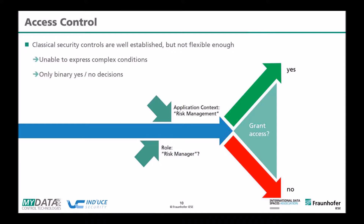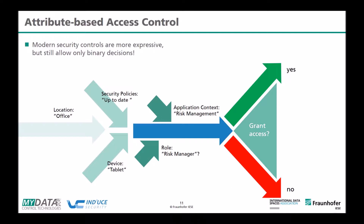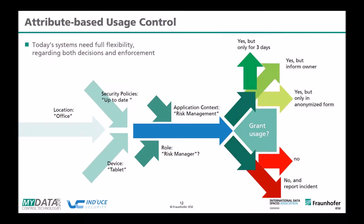For private persons, consider energy providers who need heating usage data and home presence information to optimize energy consumption. This is personally related information, so processing must comply with the GDPR and requires consent. Currently, most companies solve this with access control, but that approach is not very flexible and typically provides only binary yes/no decisions. The transition is moving from role-based access control to attribute-based access control, integrating more context like location, device type, and security policy status.